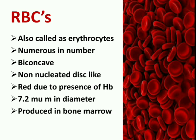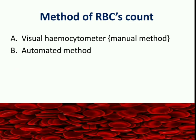RBCs are also termed as erythrocytes. They are numerous in number, biconcave in shape, and are non-nucleated. They are red due to presence of hemoglobin. The diameter of RBC is 7.2 micrometers and they are produced inside bone marrow. There are two ways to calculate RBCs: one is the visual hemocytometer, also termed as the manual method, and another is the automated method.